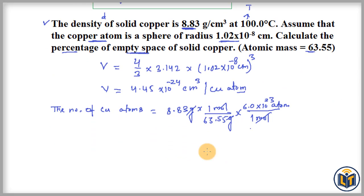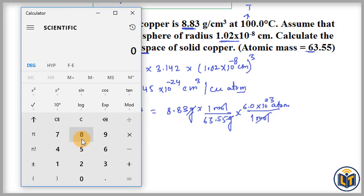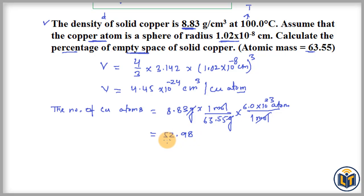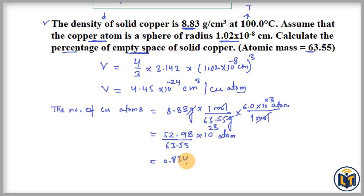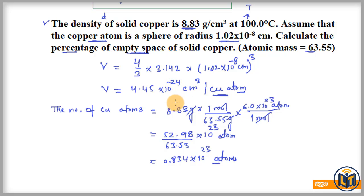Using the calculator, we multiply 8.83 × 6.0 to get 52.98, divided by 63.55, multiplied by 10²³. The result, rounded, is 0.834 × 10²³ atoms. This is the number of copper atoms present in 8.83 grams of copper. We now calculate the total volume occupied by all these copper atoms.